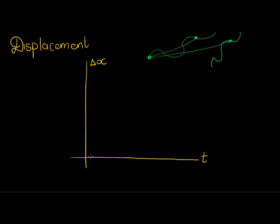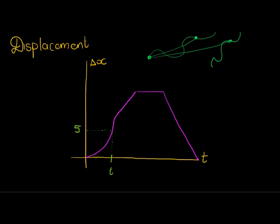Let me draw a random displacement versus time graph. It does this, then that, then this, then that. Now, what is happening at different times on this graph? As time goes by, let's say we're at a certain time. If I go and read off my displacement — let's say that value is 5 — that means the displacement after 2 seconds is 5 meters.